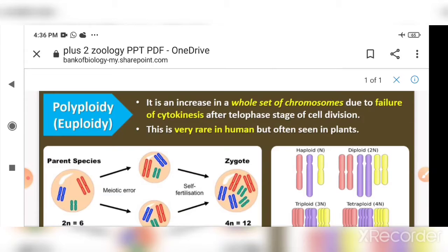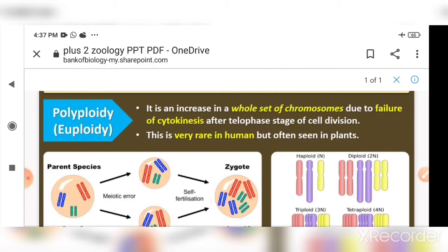During cell division, after prophase, metaphase, anaphase, and telophase, chromosomes reach the two poles in equal numbers forming two daughter cells. In anaphase, chromosomes reach opposite poles, and then cytokinesis takes place. However, sometimes the telophase is complete but there is no division of the cytoplasm.